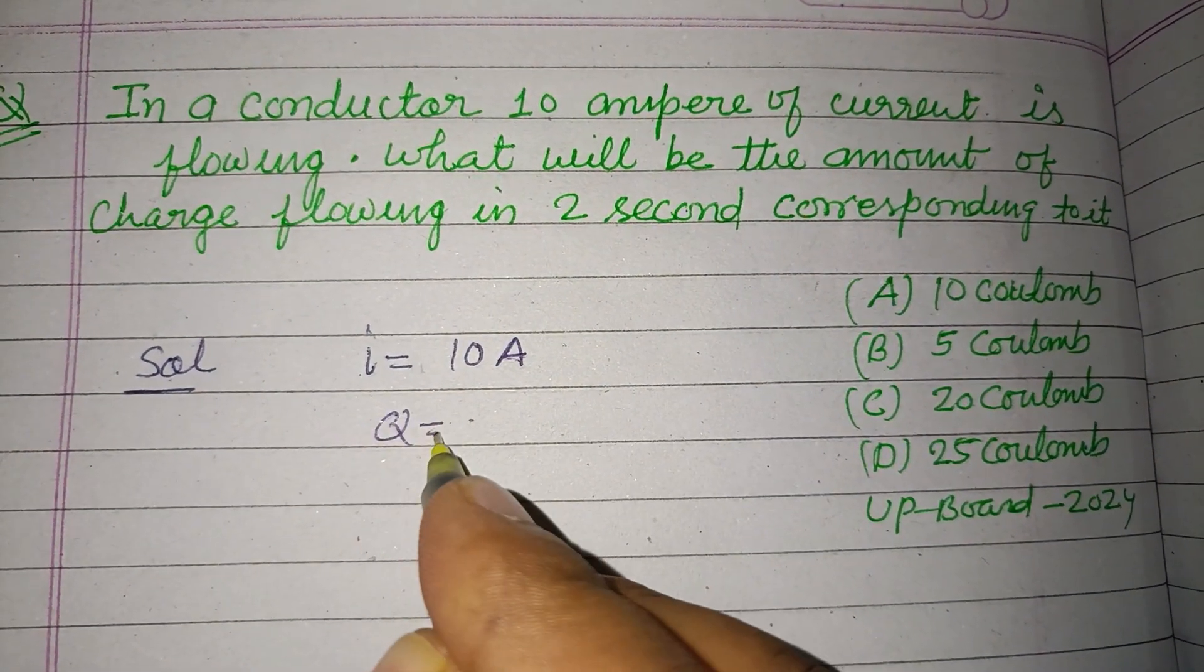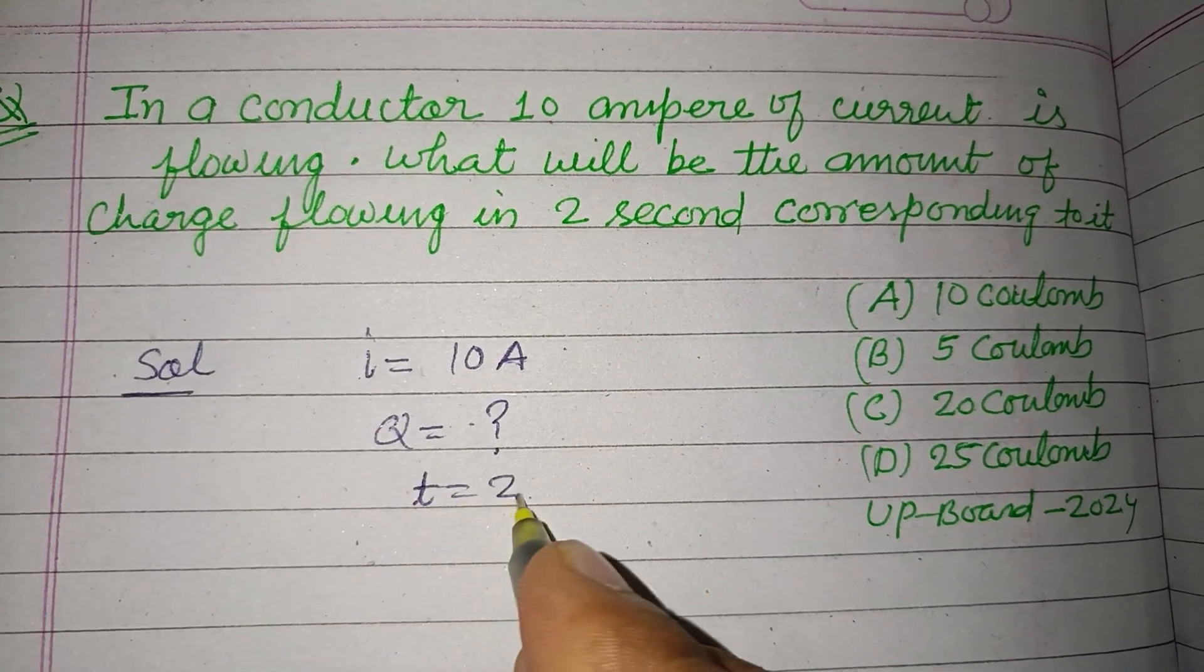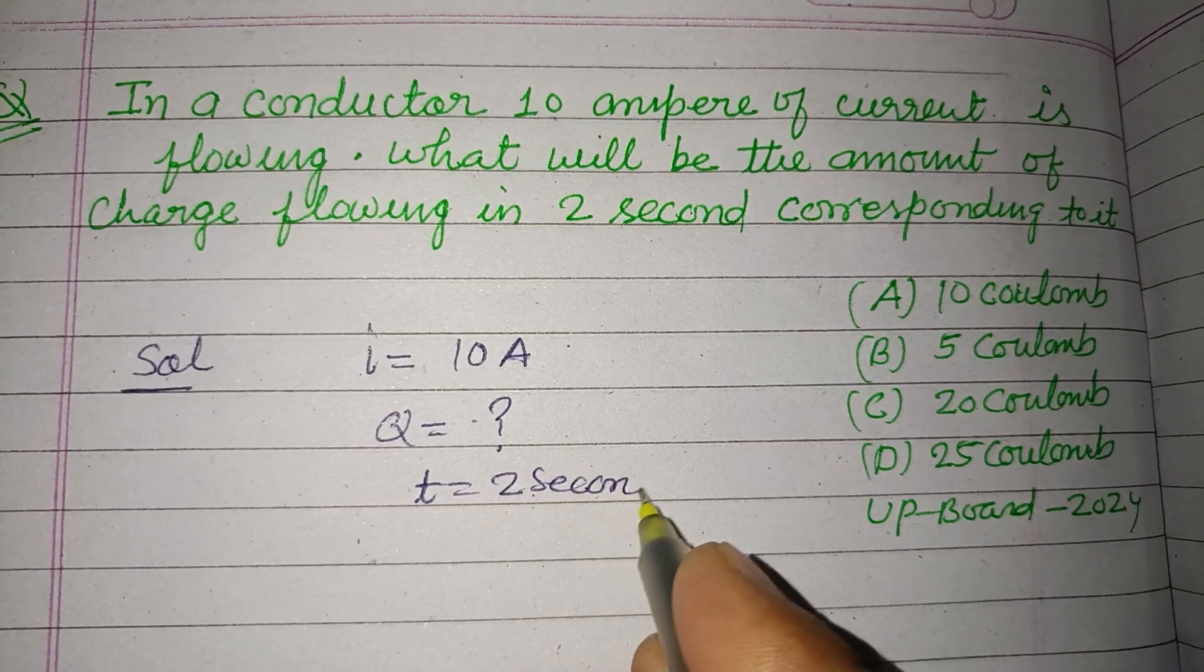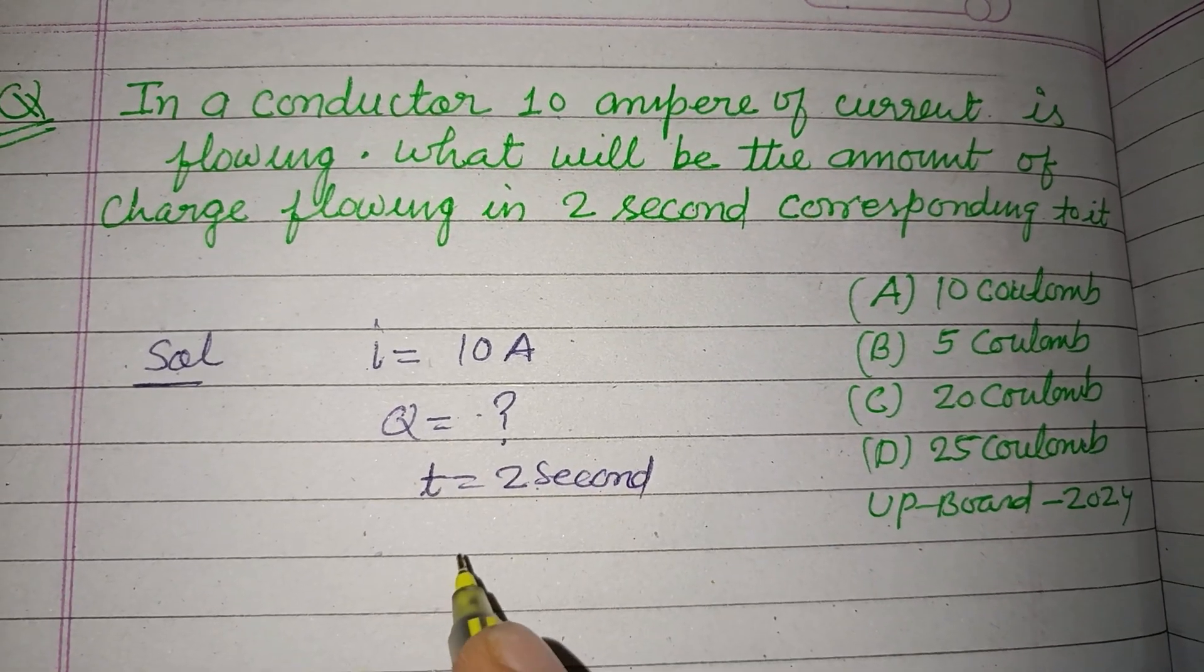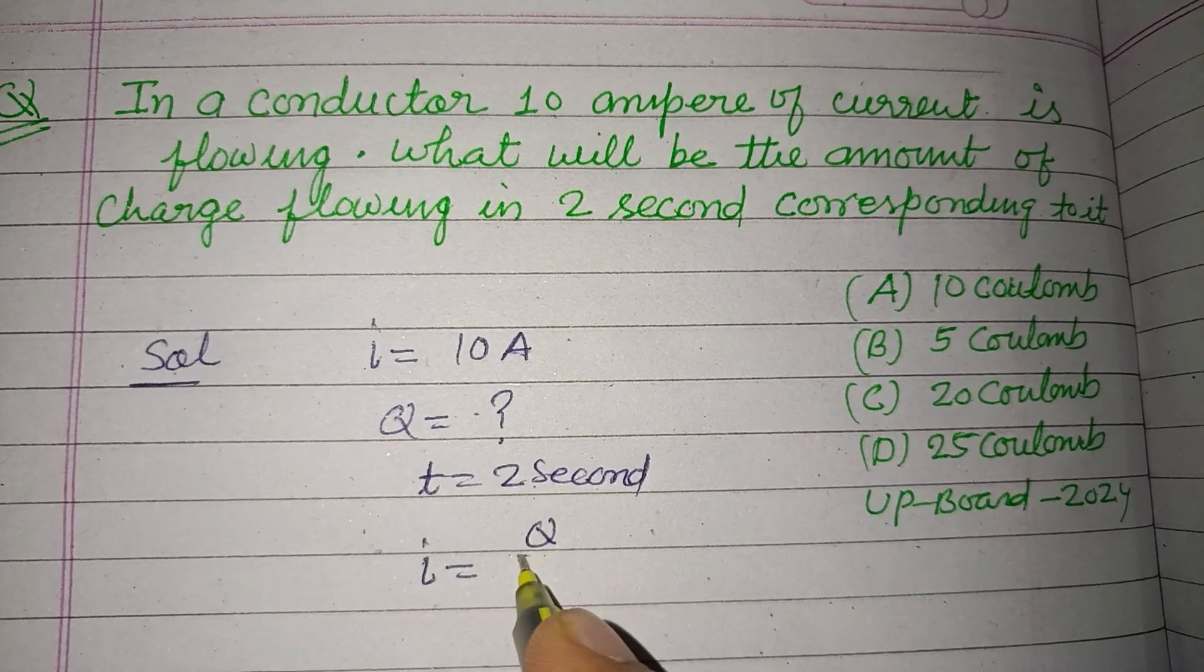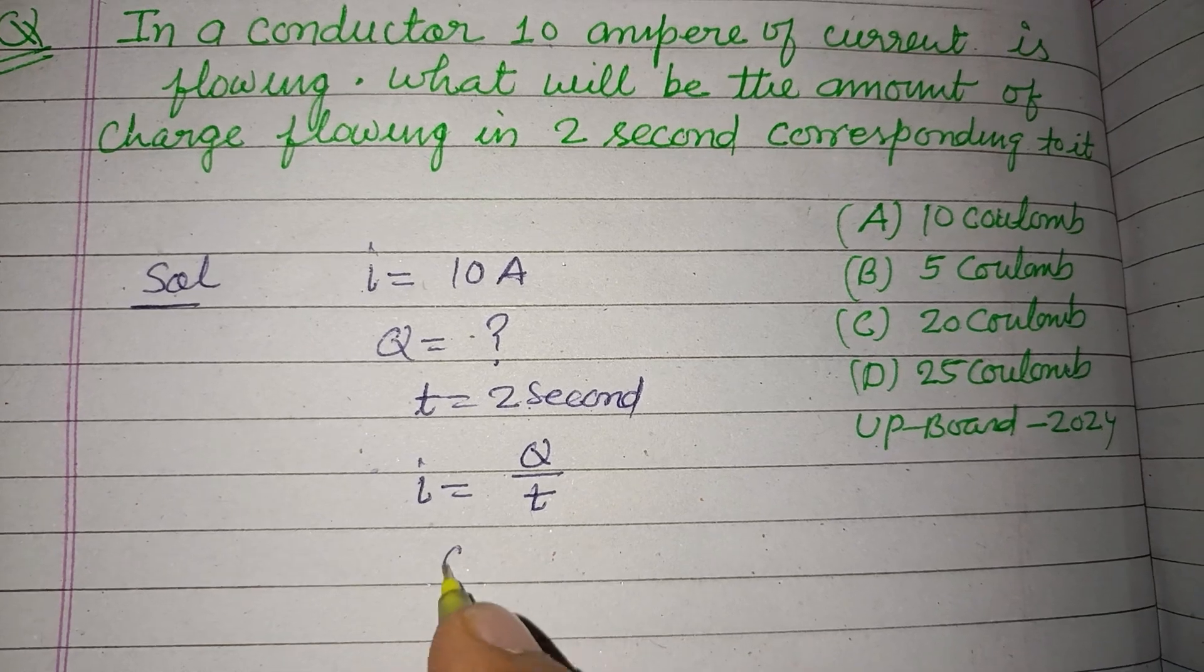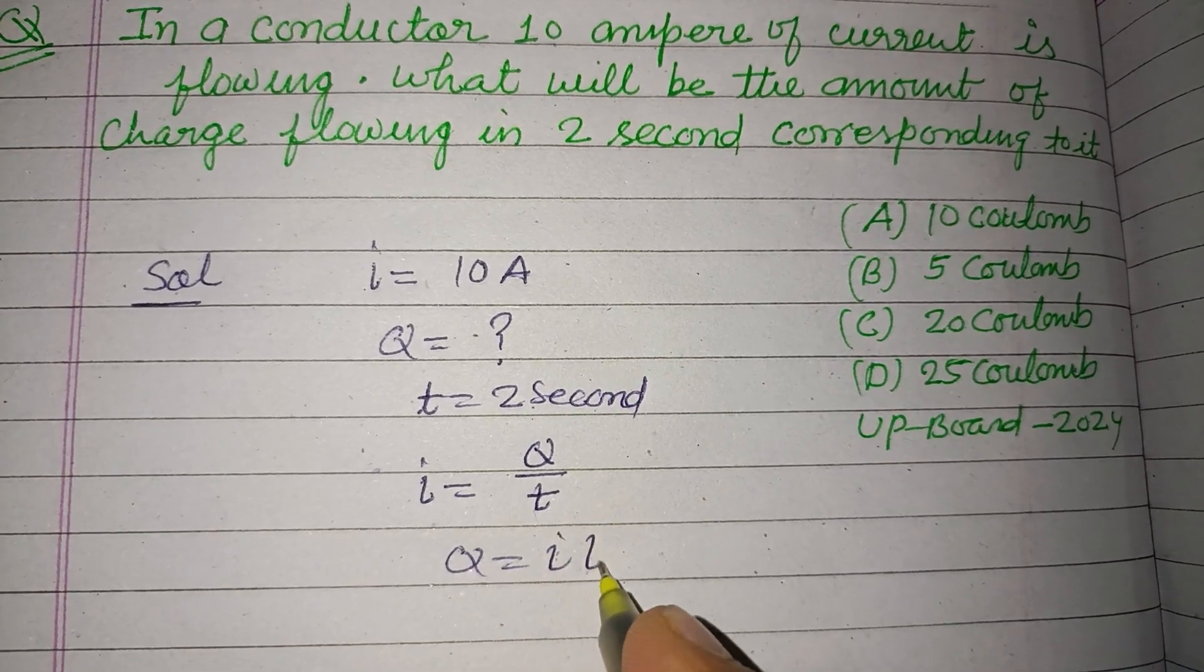And time is given to us: t = 2 seconds. So you know that current is the rate of flow of charge. I = Q/t, or Q = I × t.